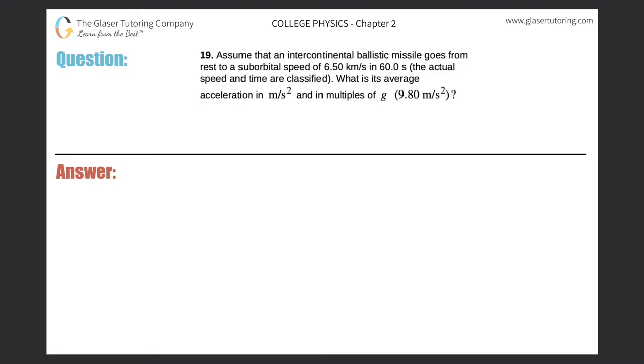Number 19. Assume that an intercontinental ballistic missile goes from rest to suborbital speed of 6.5 kilometers per second in 60 seconds. The actual speed and time are classified. What is its average acceleration in meters per second squared and in multiples of g?